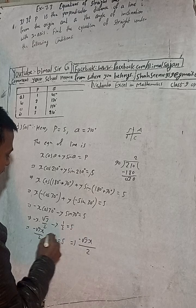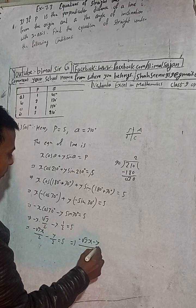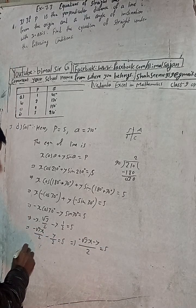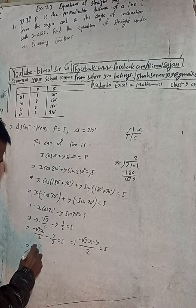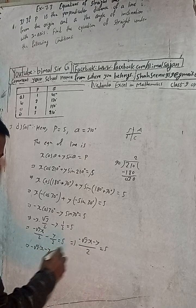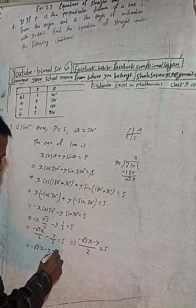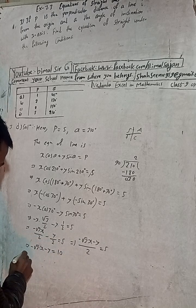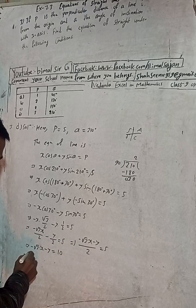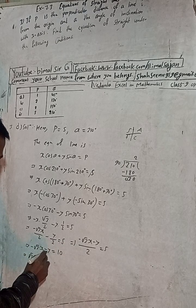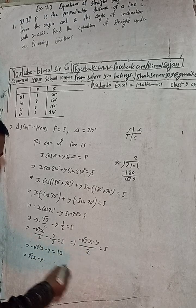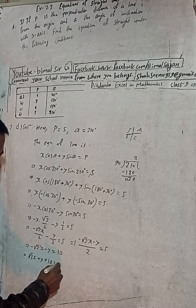This can be written as minus root 3x minus y equals 2 times 5, which is 10. Now we can take this to the right side, so this minus will be plus root 3x and this minus y will be plus y, and 10 on the right side. So root 3x plus y plus 10 equals 0.